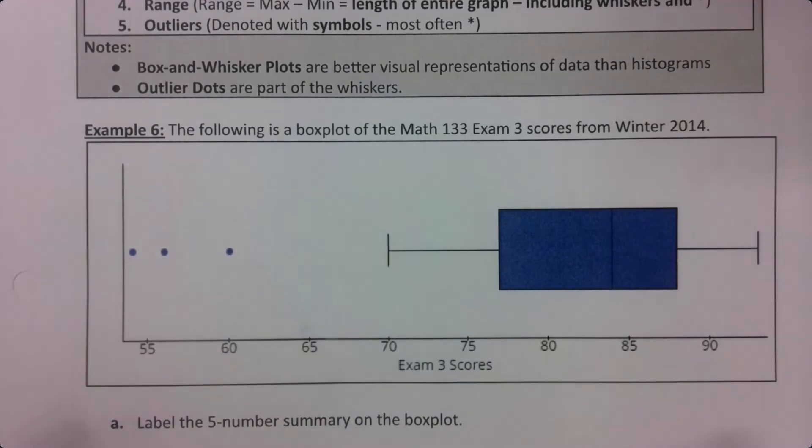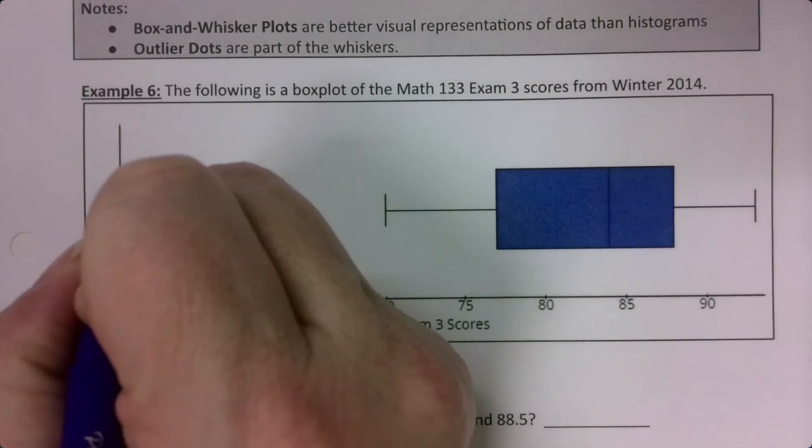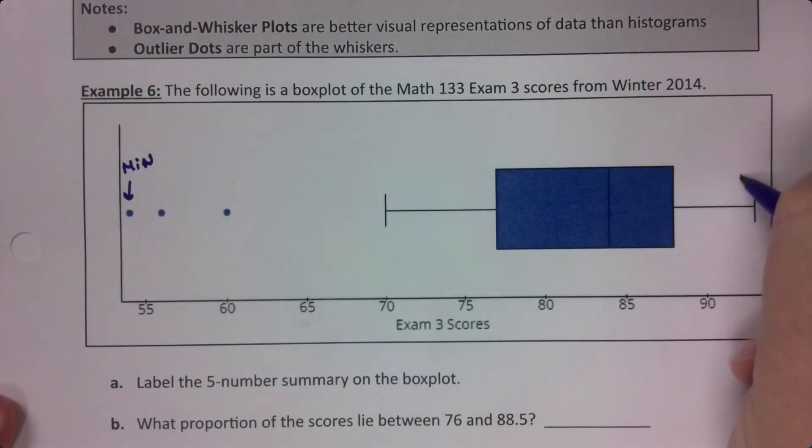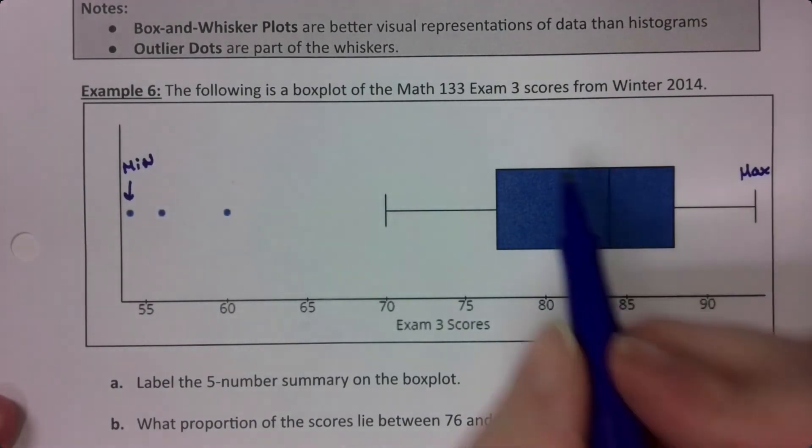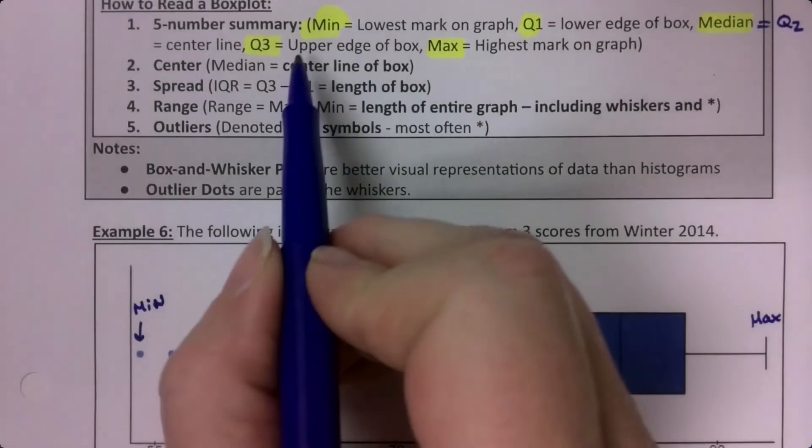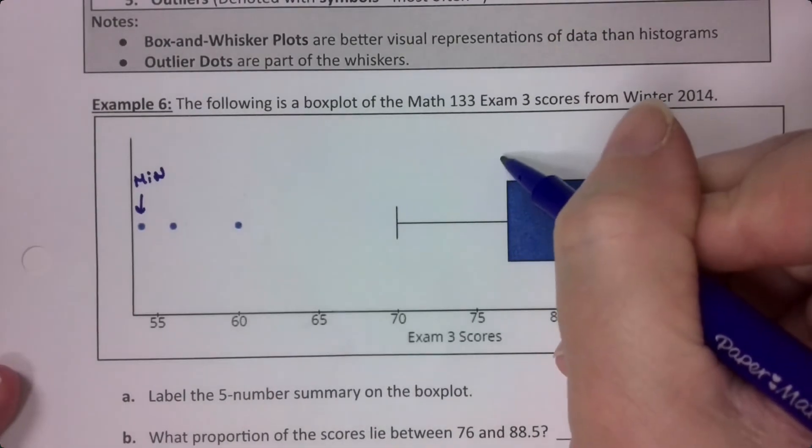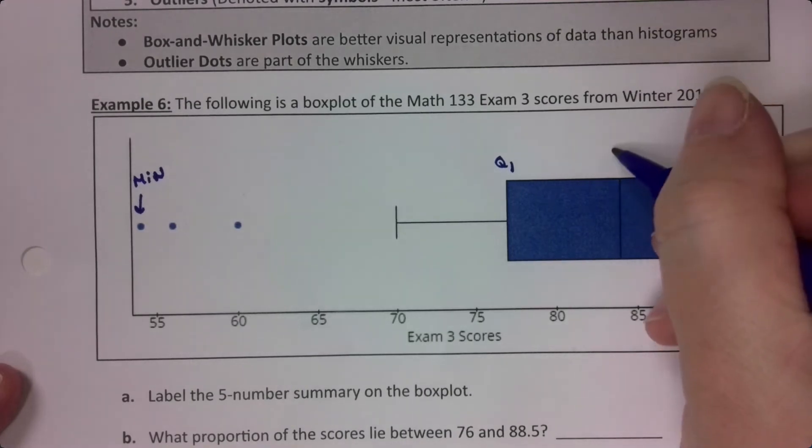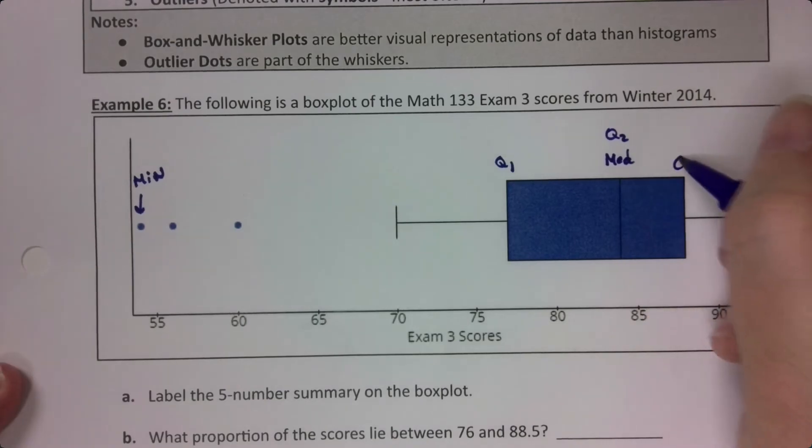Let's label this one so we can understand what we're seeing. Over here is the minimum, the lowest value in our data set. Over here is the maximum, that's the highest value. Now Q1 is the left edge of the box, the lower edge. This line right here is Q2, which is the median, and this is Q3.